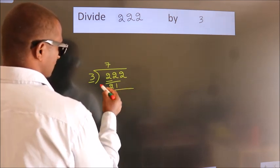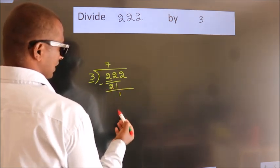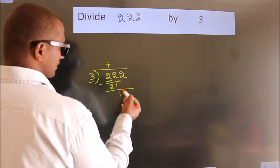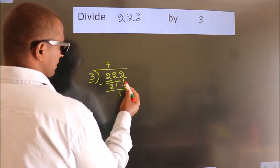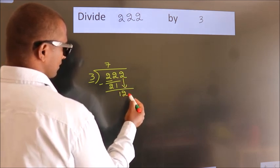Now we should subtract. We get 1. After this, bring down the beside number, so 2 down. So 12.